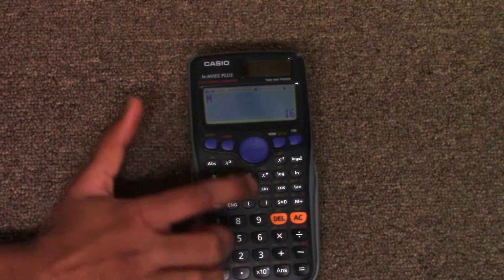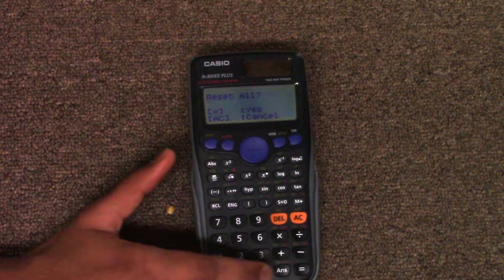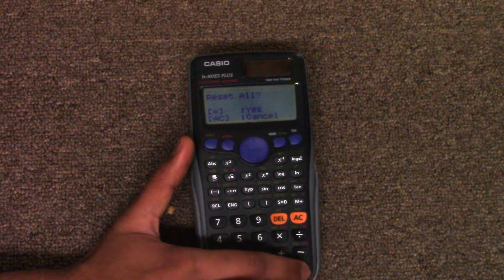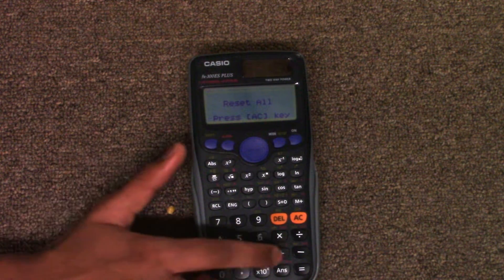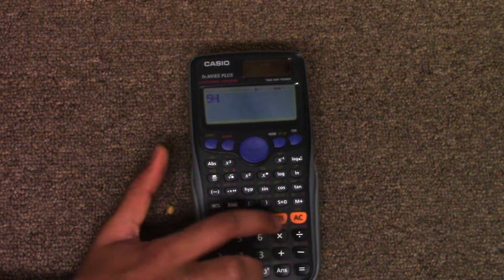To reset the calculator, press shift 9. Then press 3 to reset your memory and setup. Press equal, or you can press AC to cancel this operation. Press AC again and you're done resetting your calculator settings and memory.